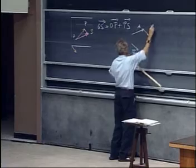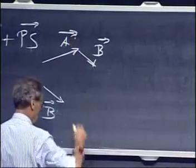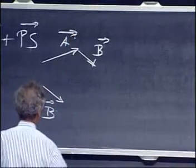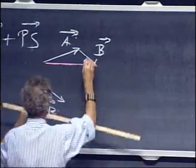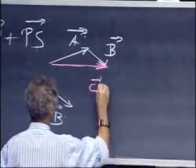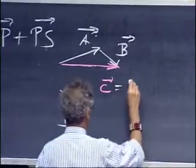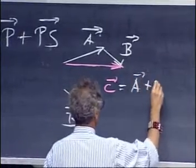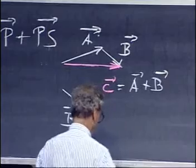So this is B. This is a vector. And then the net result is A plus B. This vector C equals A plus B. That's one way of doing it.